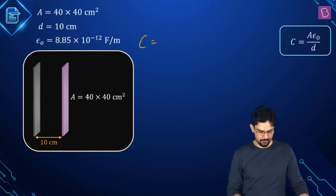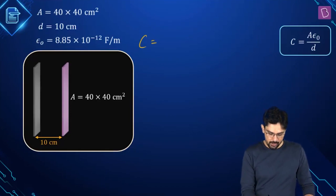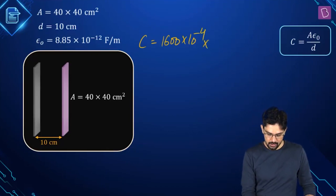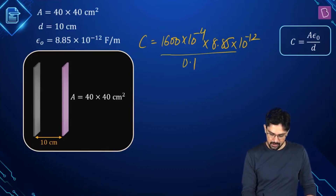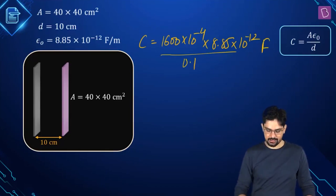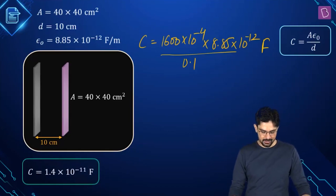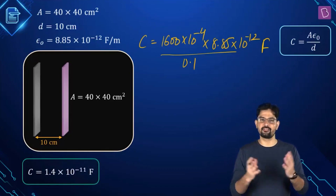Substituting values: C = (1600 cm² = 1600 × 10⁻⁴ m²) × (8.85 × 10⁻¹² ) / (d = 0.1 m). Simplifying this expression gives the capacitance as 1.4 × 10⁻¹¹ Farad, so option B is the right answer.